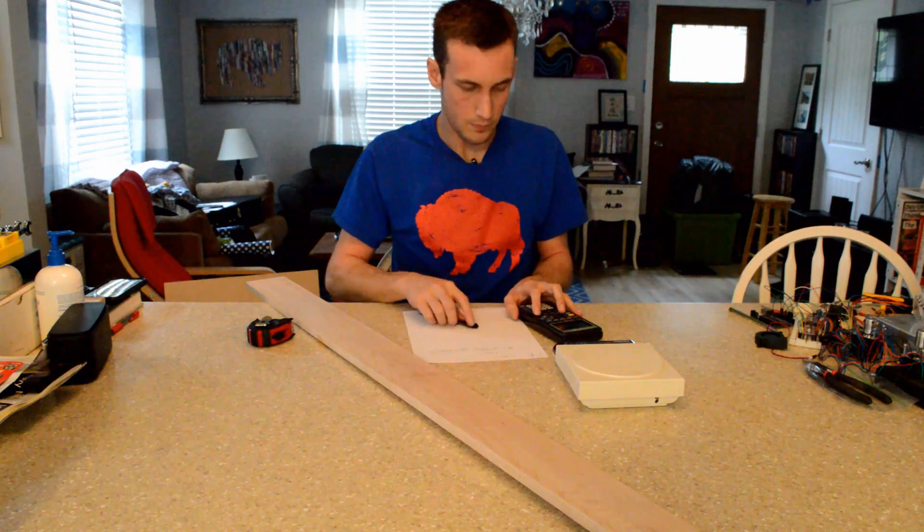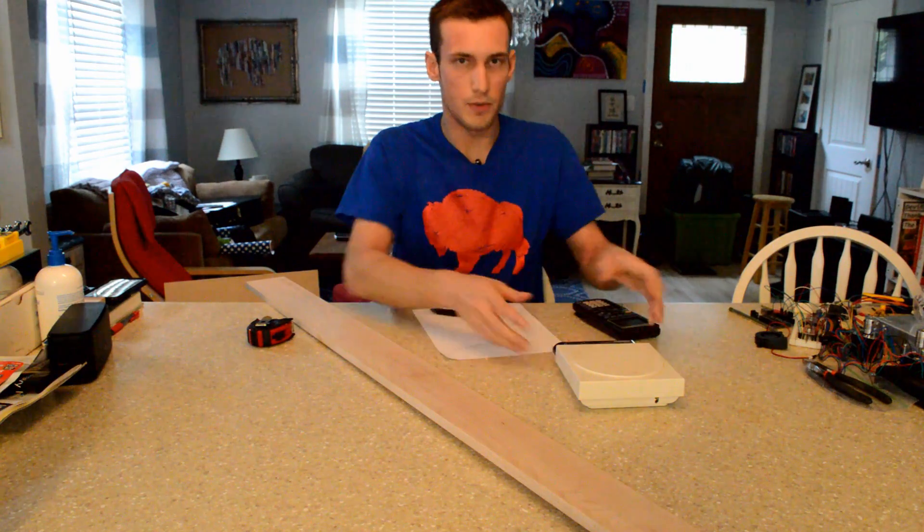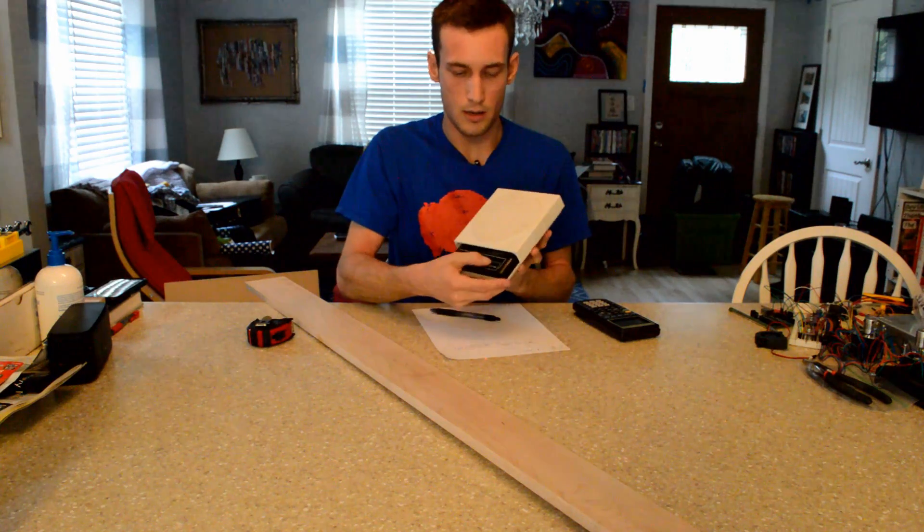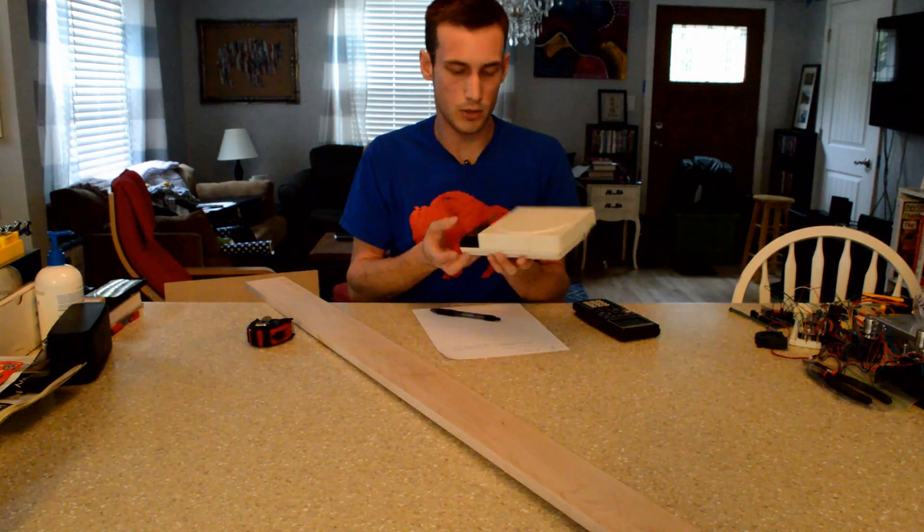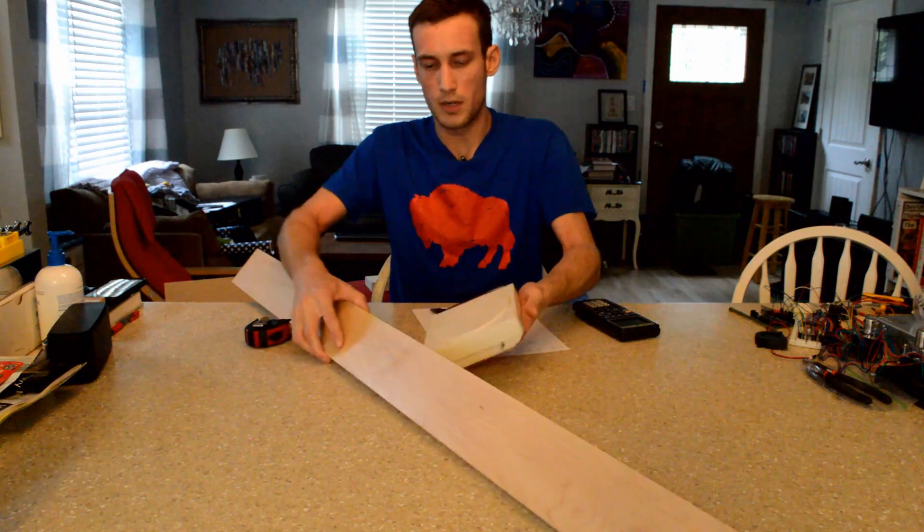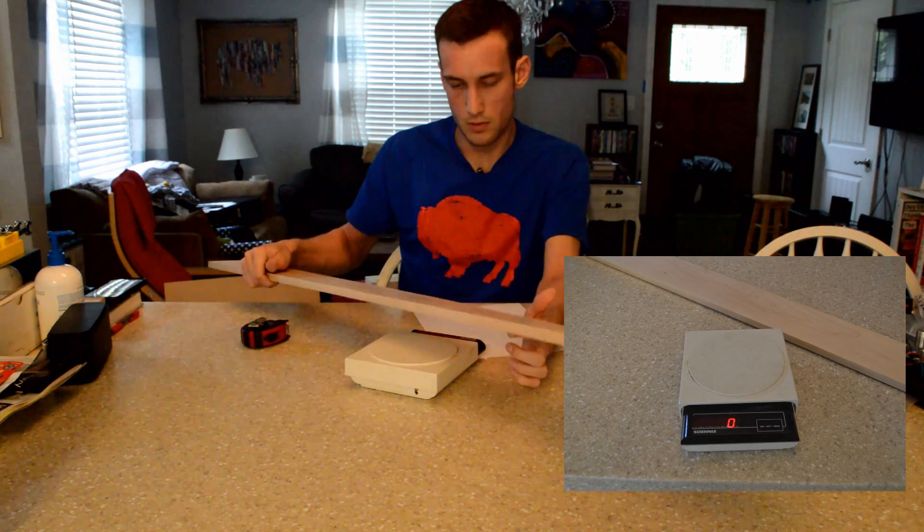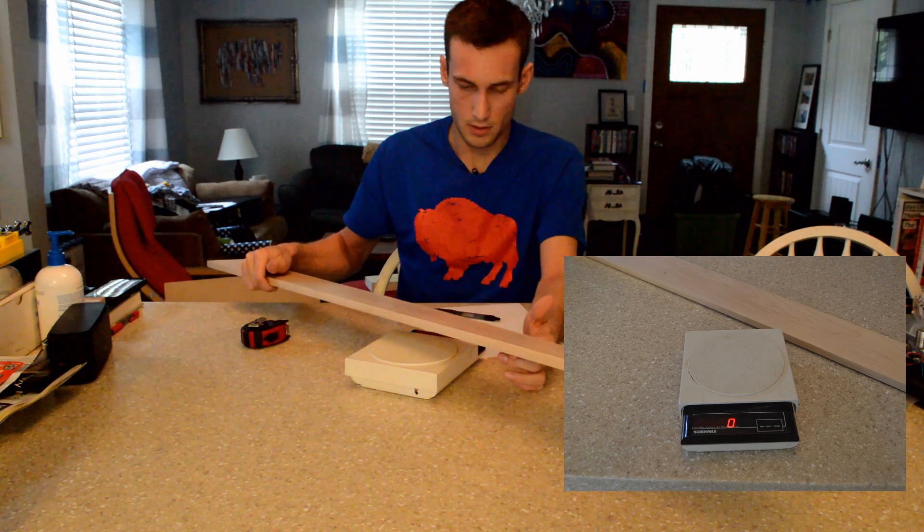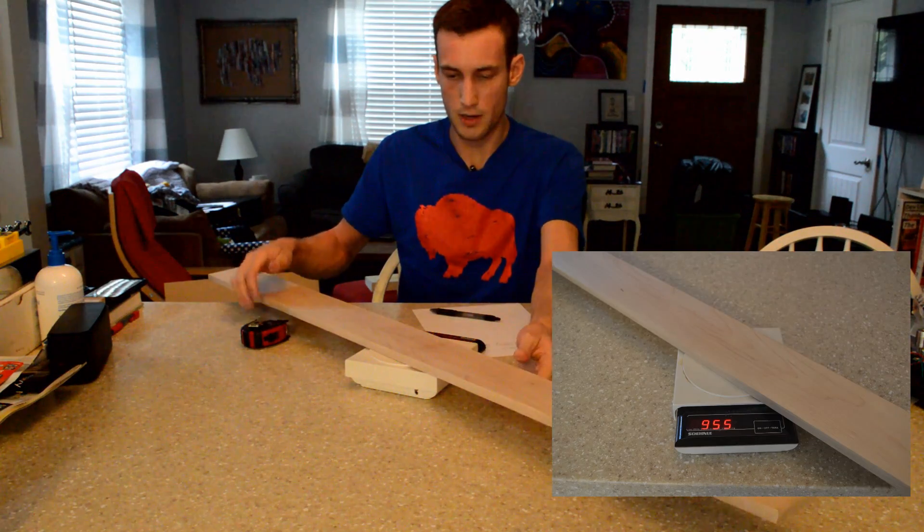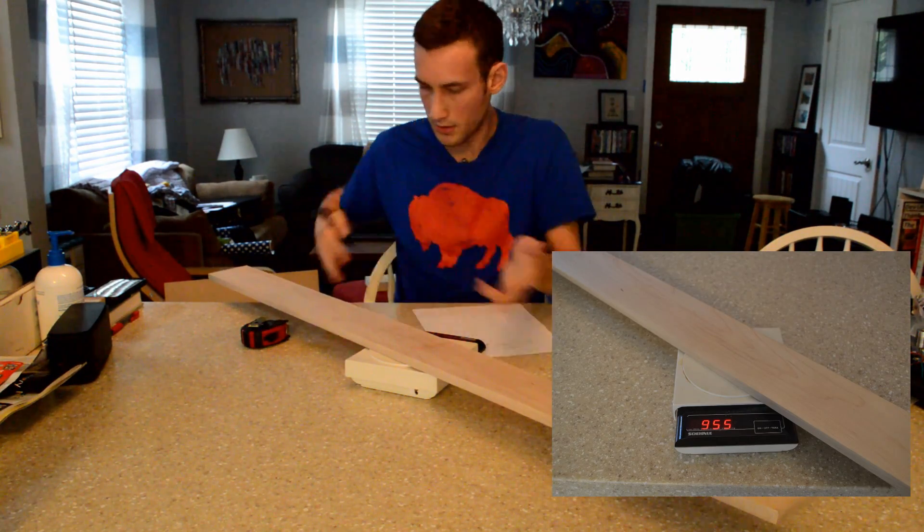Now we need the mass in kilograms. I have this kitchen scale here that I'll turn on right now, and this measures in grams. It goes up to 2,000 grams. So I'm going to take the piece of wood when this zeroes and put this on. There we go. It'll balance, make sure it's not touching anything else.